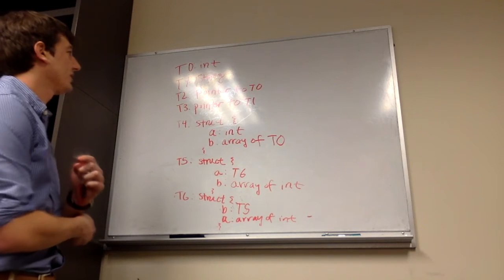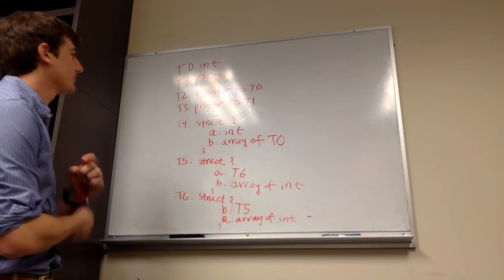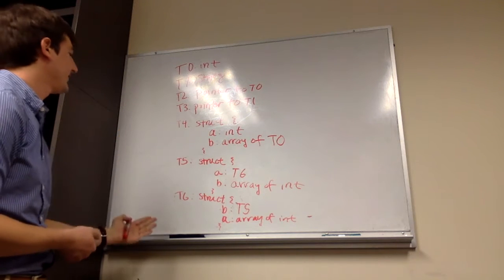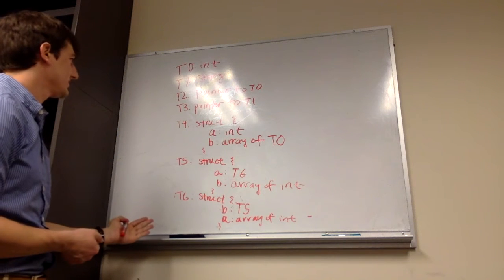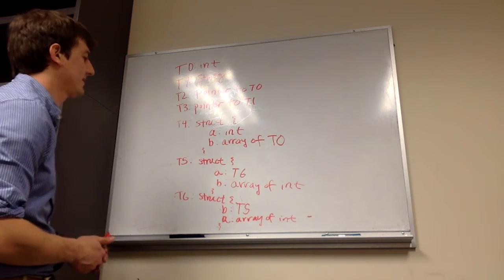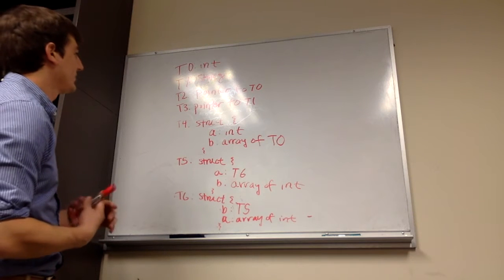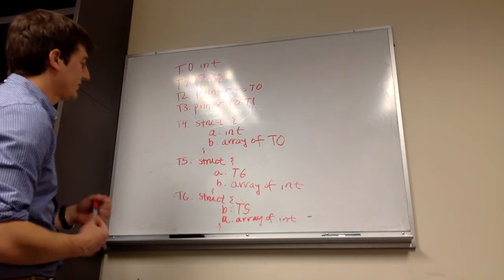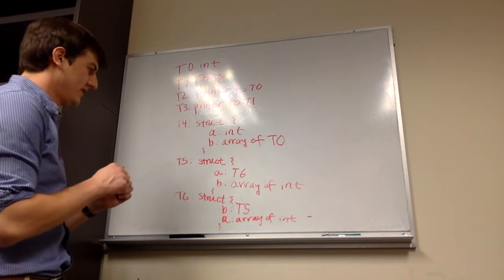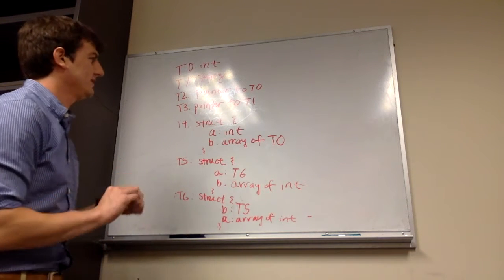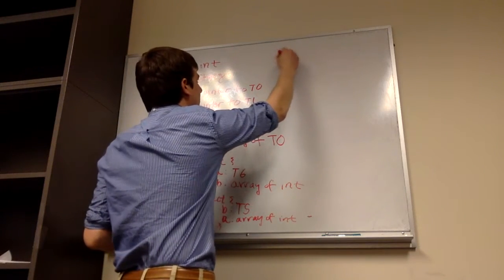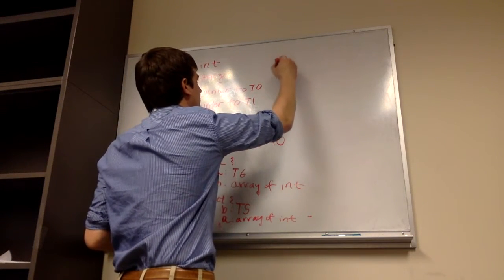Now we're going to look at a question about structural equivalence. We have seven different types, and we're going to talk about how to decide which ones are structurally equivalent. The easy way to do this is we make a table of types.